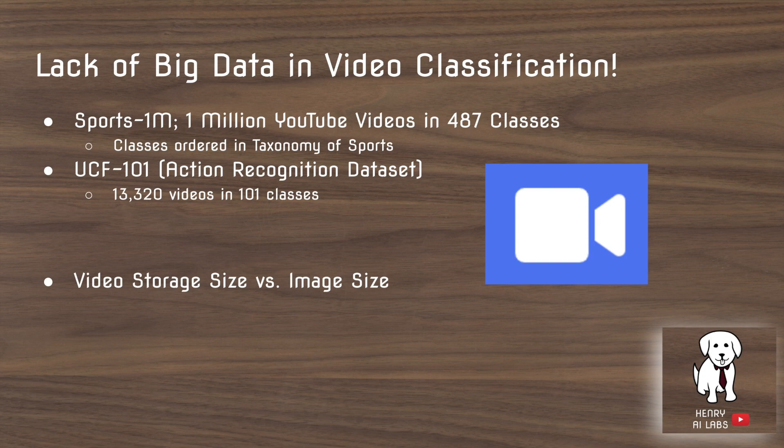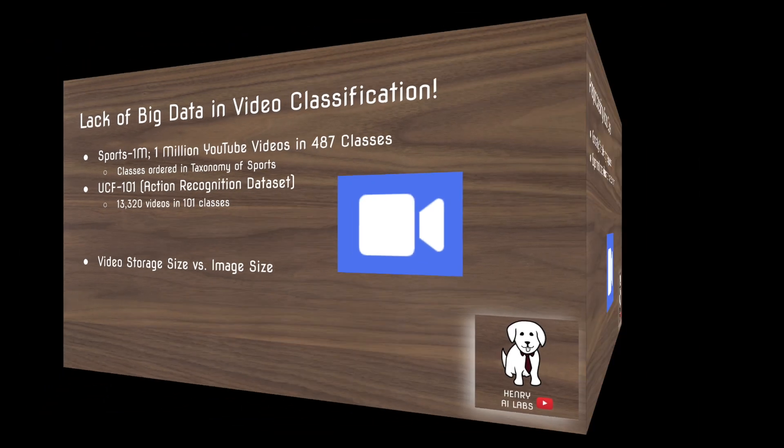A video would be a stack of these frames, so for one second of video you have 30 images at 30 FPS. The datasets they use are Sports-1 Million and UCF-101. Sports-1 Million contains 1 million YouTube videos in 487 classes, and the UCF-101 dataset contains 13,000 videos in 101 classes.